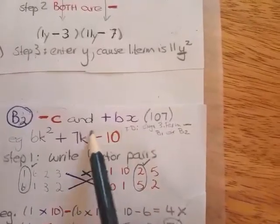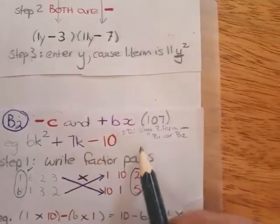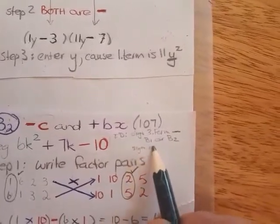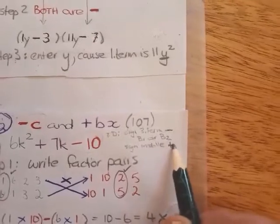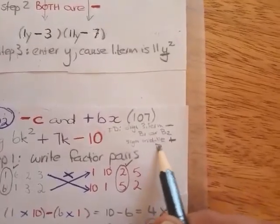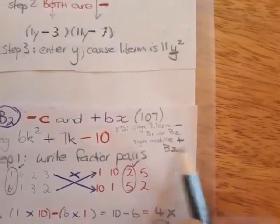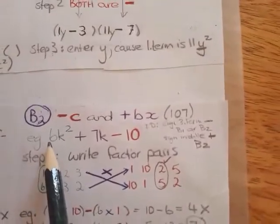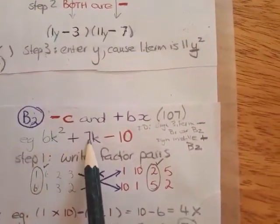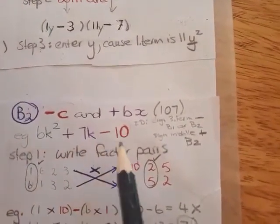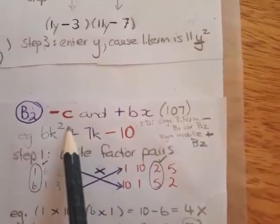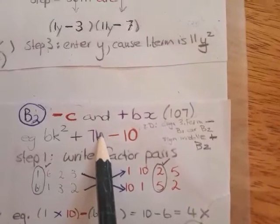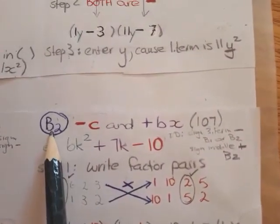In this case, it's negative. Then you look at the sign of your middle term. And if your middle term is positive, then you have a B2 method. So if you look at the example, 6k squared plus 7k minus 10, we have a negative third term and we have a positive second term. And that gives me B2.